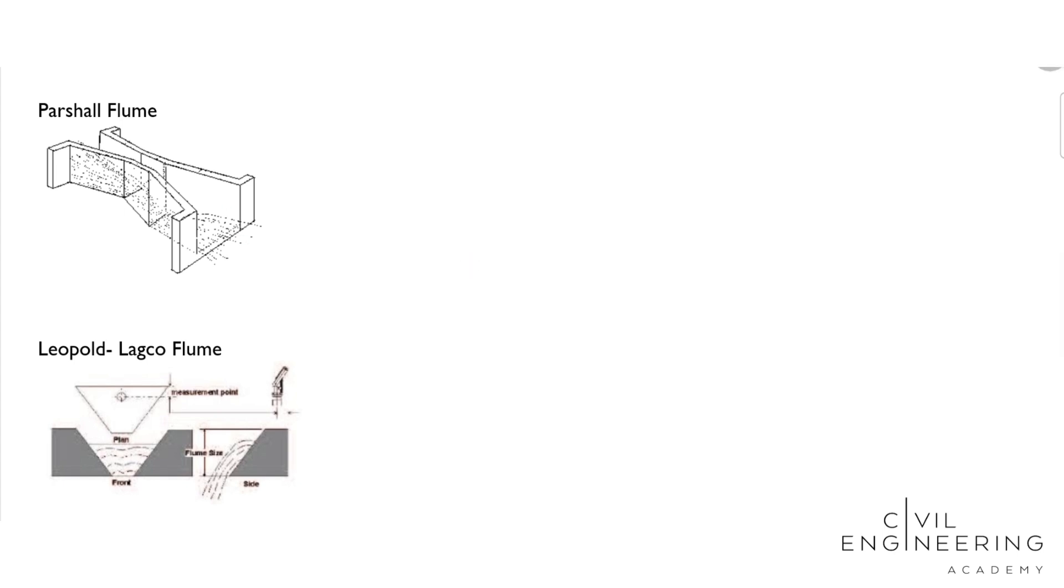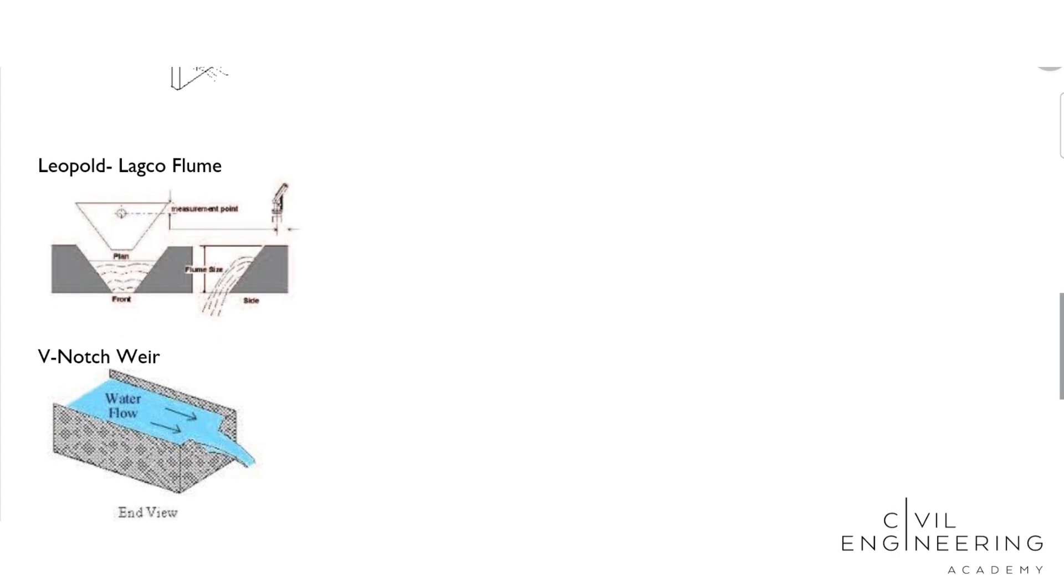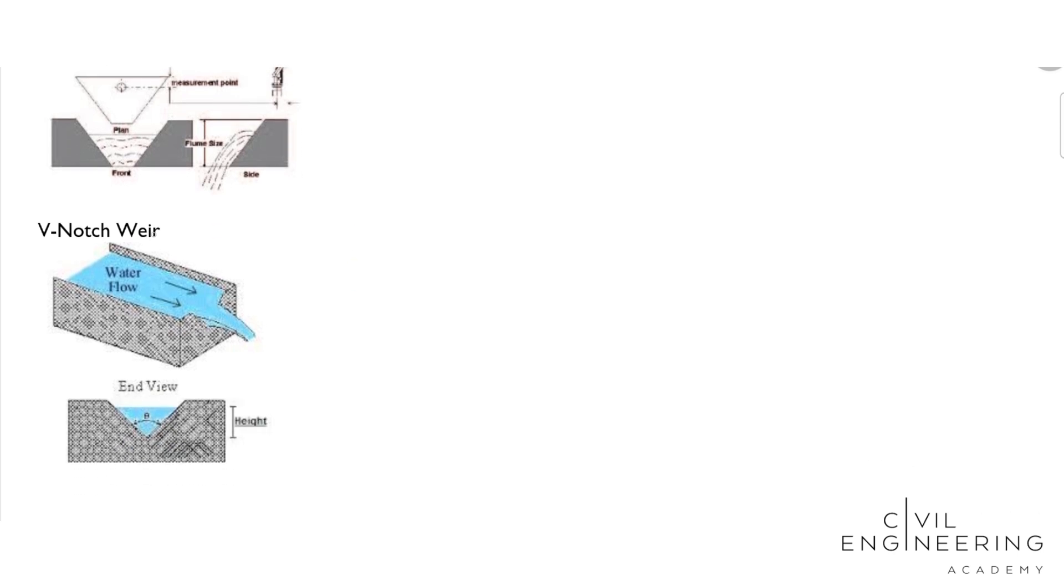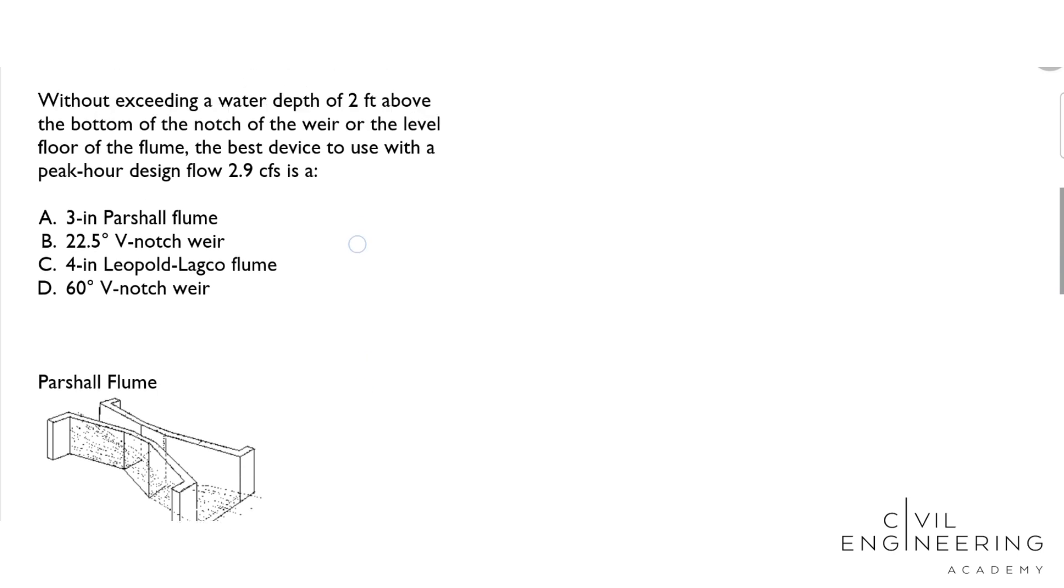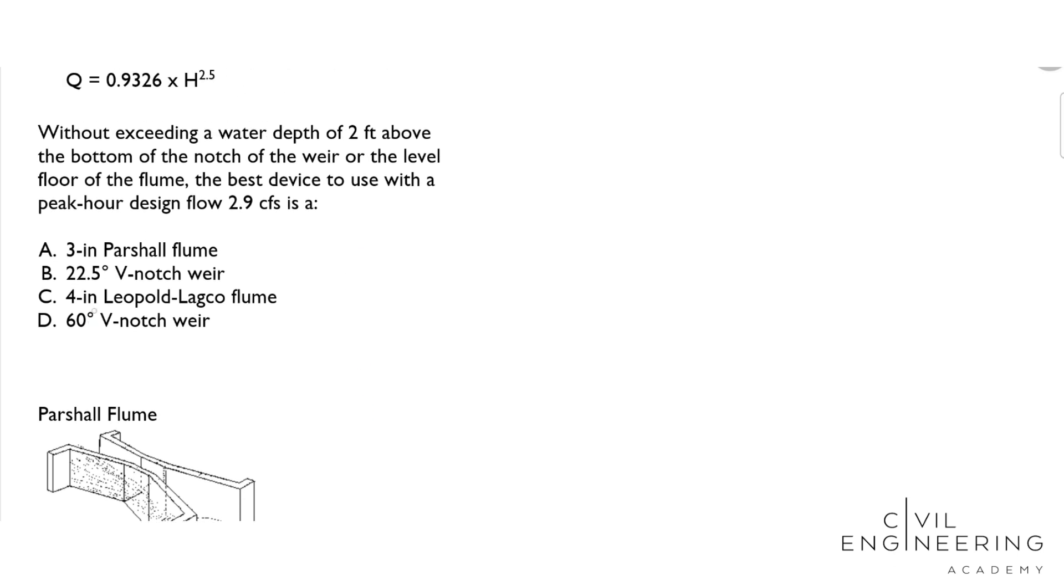This is what a Parshall flume looks like, and then this is the Leopold Lagco flume. It's pretty similar to the V-notch weir, but instead at the bottom it's got this flat part. And then this is what the V-notch weir looks like, and that is the angle that was mentioned here, the 22.5 or the 60 degrees.